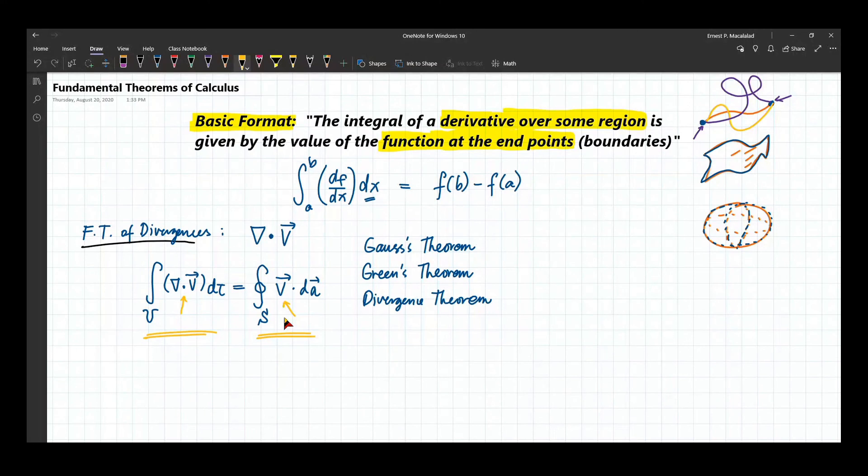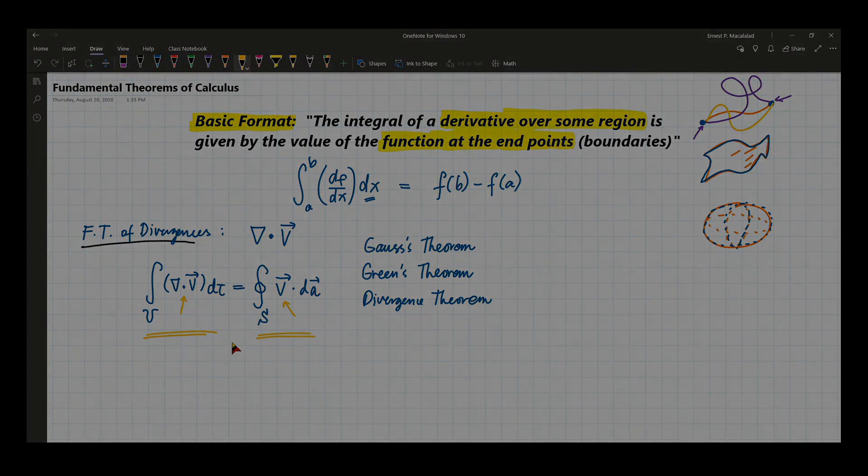So this is the divergence theorem. One good thing about divergence theorem is that instead of having a triple integral involved in terms of this volume integral, we can express this as a double integral. So that means we can reduce the dimensionality of your computations, and that is very convenient for most cases.